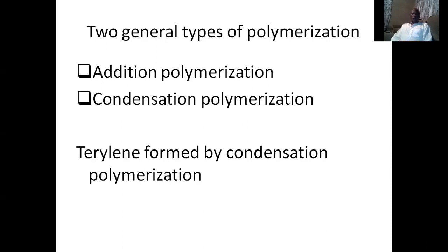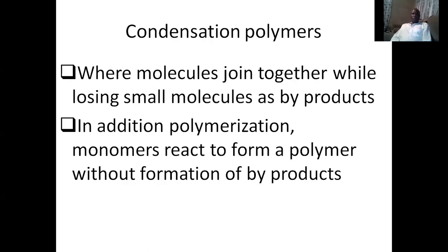Telerin is formed by condensation polymerization, which is a process where we combine the monomers and in the process we remove water. Where molecules are joined together while losing small molecules as byproducts, this is what's known as condensation polymerization — unlike in addition polymerization, where we don't form any other product apart from the polymer itself, because nothing is removed.